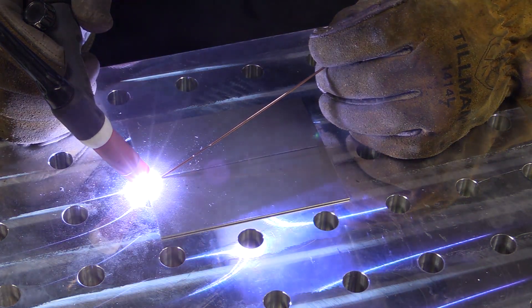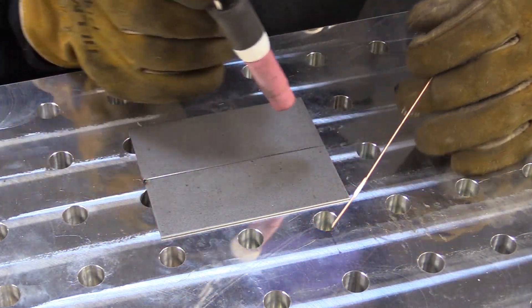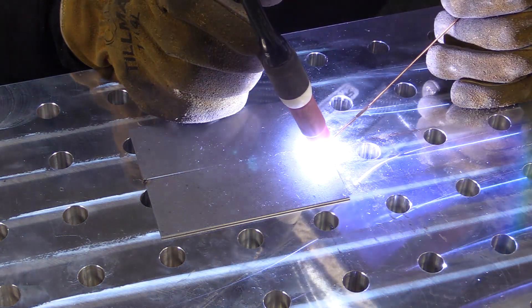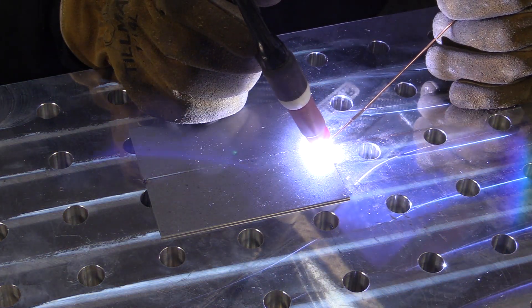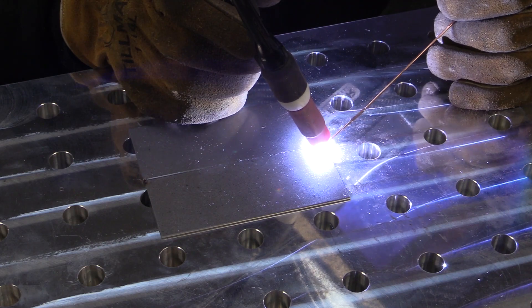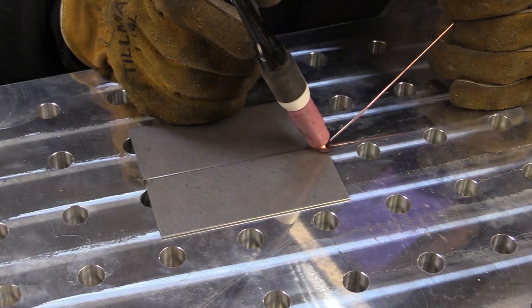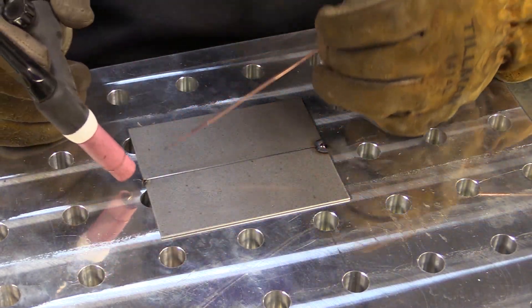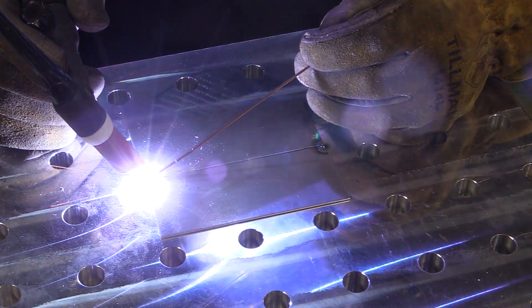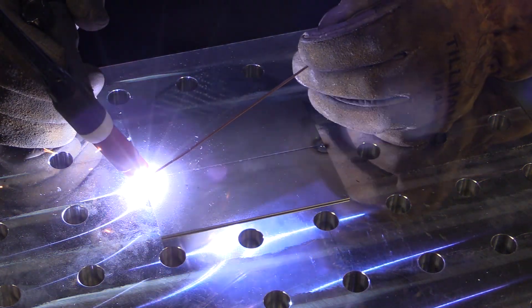As we get ready to weld this out, we're going to tack the ends. Both ends with enough weld there to keep it from coming apart when you weld. One of the worst things you can do is tack the ends and have it bust apart while you're welding. Never a good thing for what we're trying to do here.